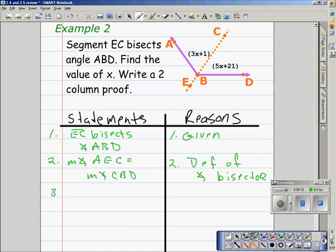From there, we'll substitute in 3X plus 1 and 5X plus 21 because those are the values we're given or the expressions we're given for those two angles.